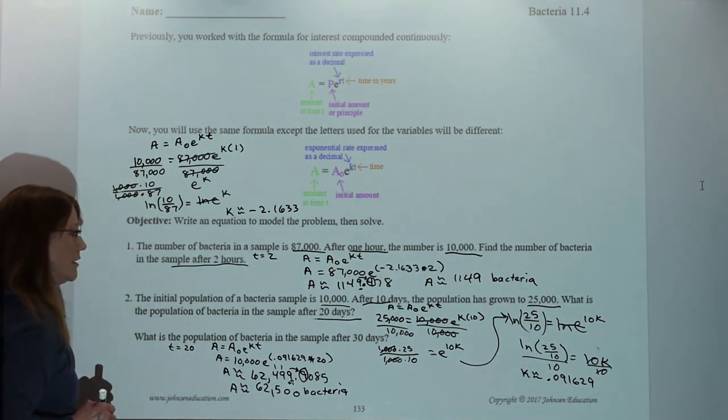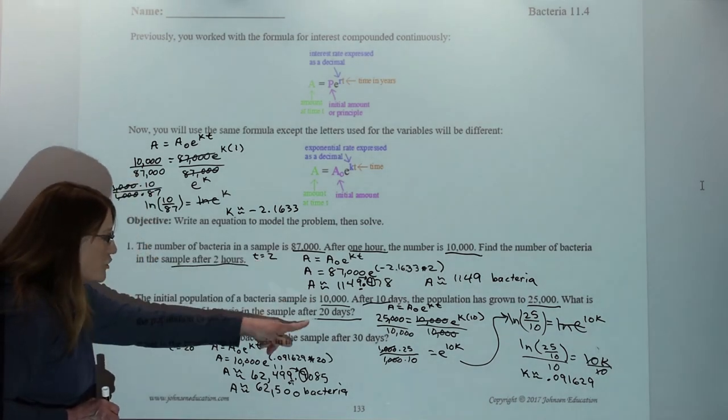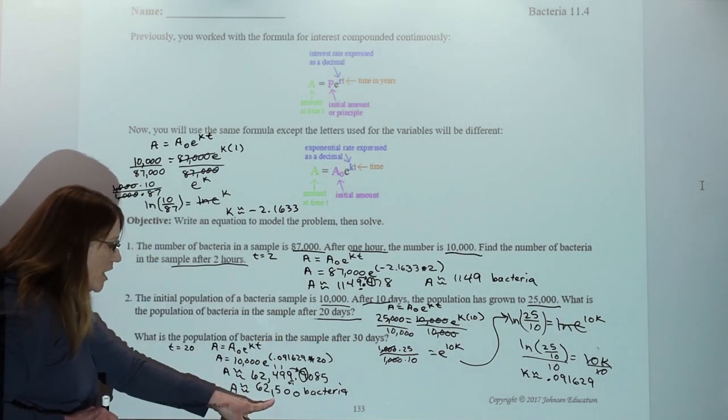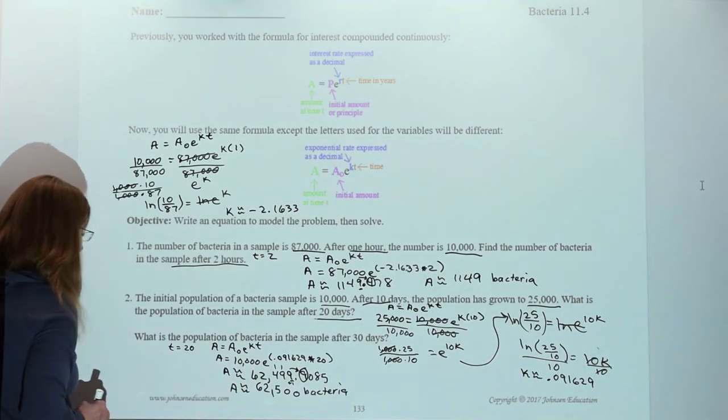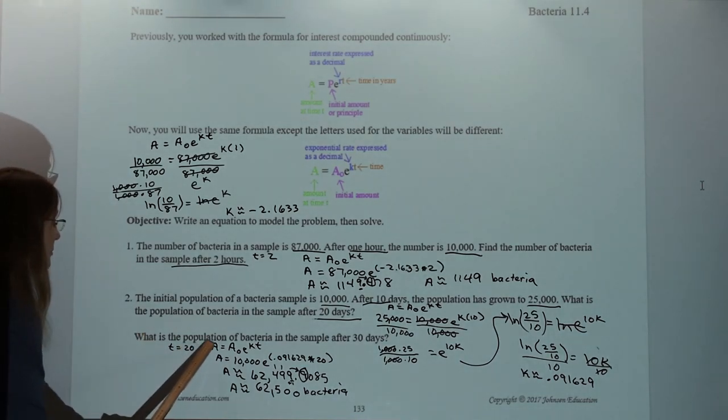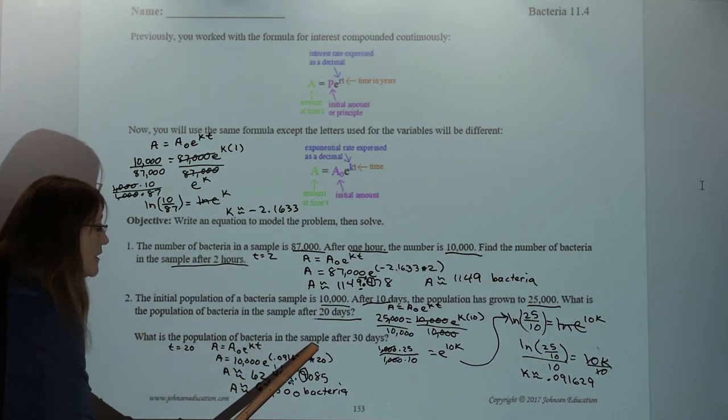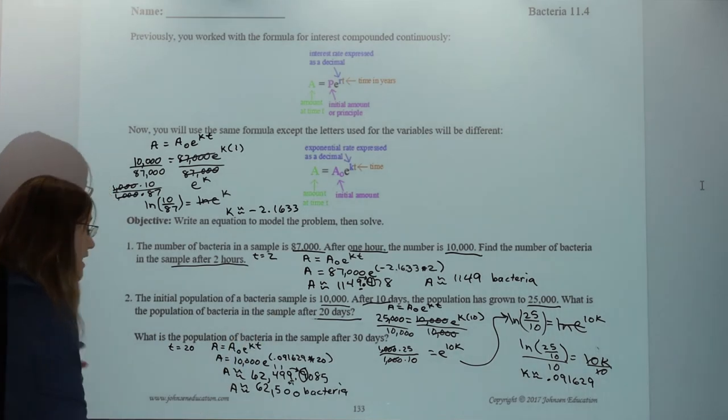Wow. So we start with 10,000. After 20 days, we ended up with 62,500. Well, what do we have left for today? What is the population of bacteria in the sample after 30 days? Guess what? That one's for you.